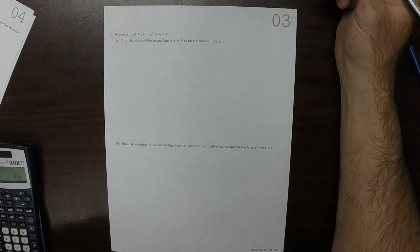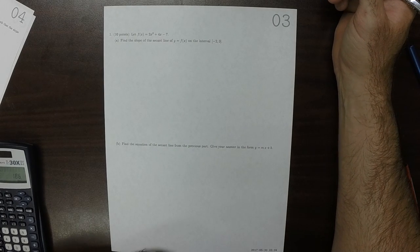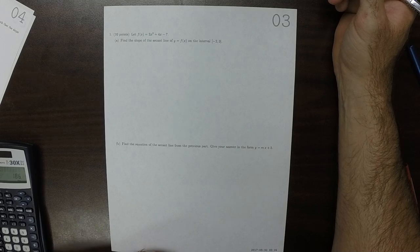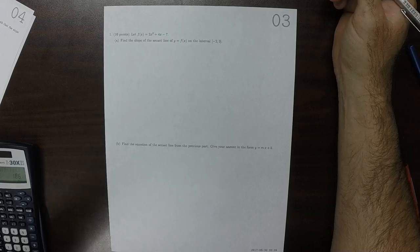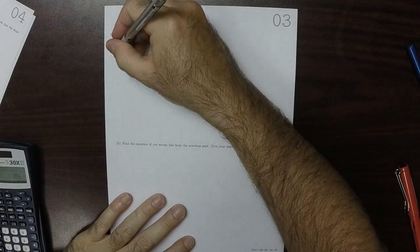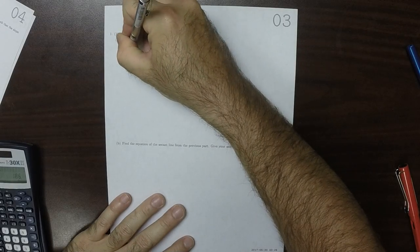This is the solution to written homework three. Find the slope of the secant line. So the slope of the secant line